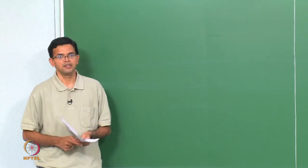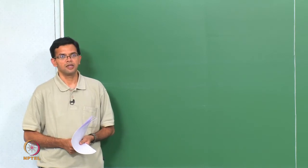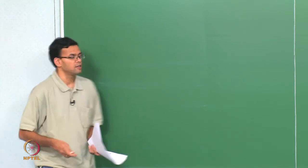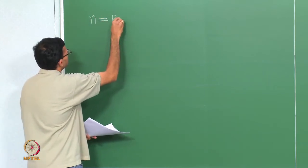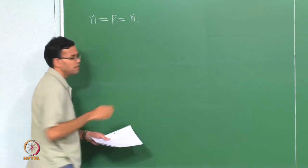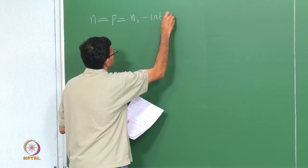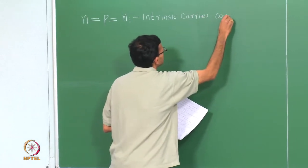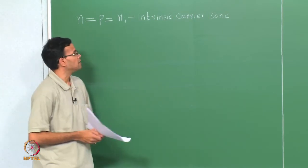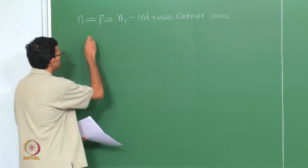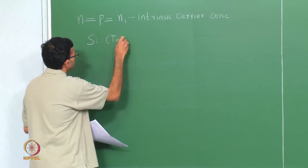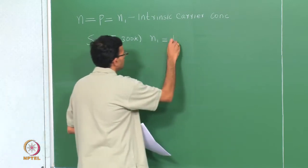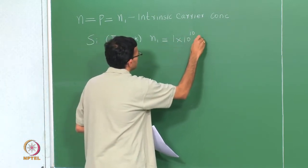Last two classes we looked at intrinsic semiconductors. Intrinsic or pure semiconductors are those where electrons and holes are generated in pairs. We saw that the electron concentration is the same as the hole concentration, and we called it Ni, where Ni is the intrinsic carrier concentration. We also looked at some calculations for Ni in the case of silicon at room temperature and found that Ni has a value of around 1 times 10 to the 10 per centimeter cube.